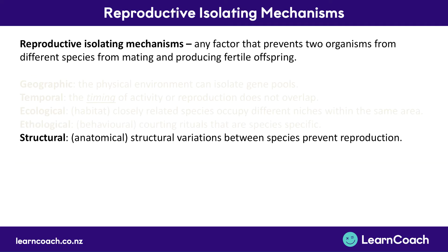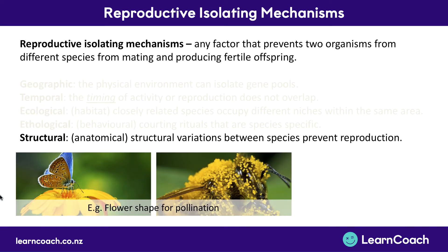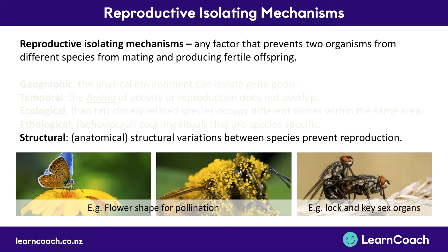The final mechanism is structural — anatomical variations between species. For example, flowers that are really open will usually only cross-pollinate with other open flowers, because the pollinating butterfly can only physically get into open flowers. Bees, on the other hand, pollinate closed flowers by crawling inside. Another example is the lock-and-key model for sex organs — the male's sex organs fit cleanly into the female's of the same species. This is why elephants can't mate with flies — those physical differences prevent reproduction.